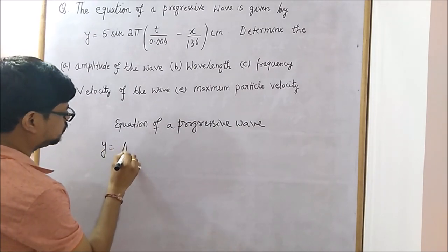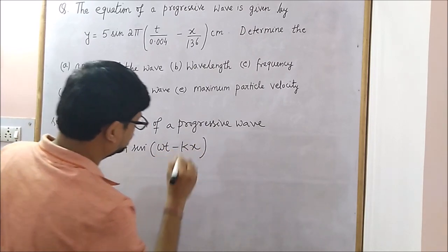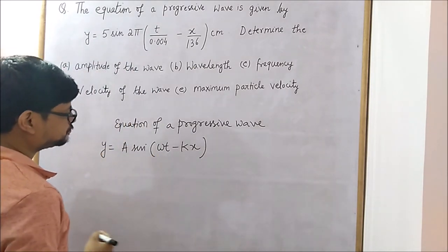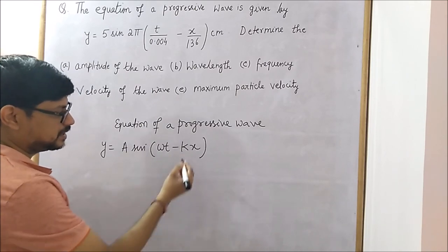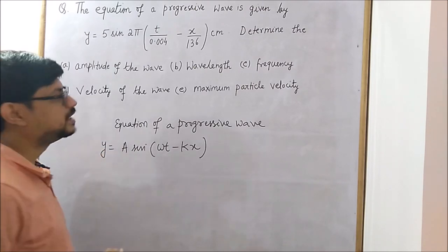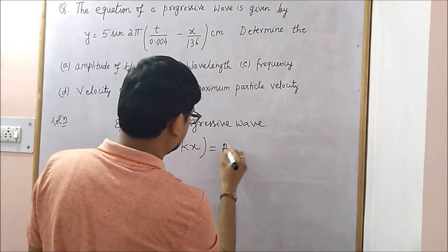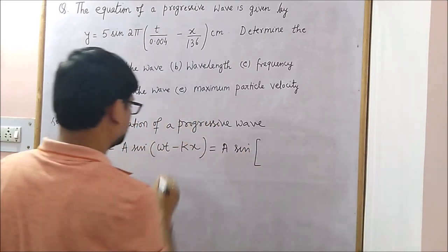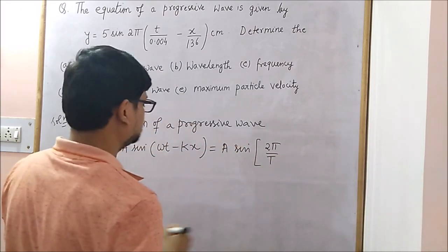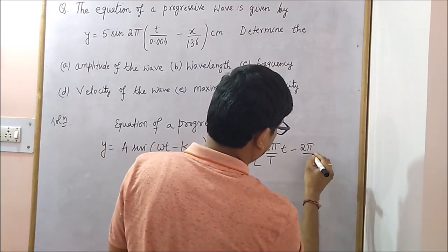We know that the equation of a progressive wave is given by y equal to a sine of omega t minus kx, where omega is the angular frequency, t is the time, k is the wave number, x is the position, y is the displacement, and a is the amplitude. We can also write it as y equal to a sine, where omega is 2 pi by capital T and k is 2 pi by lambda.